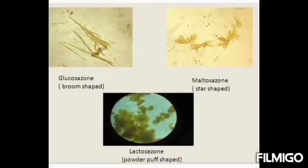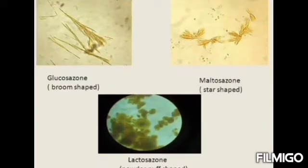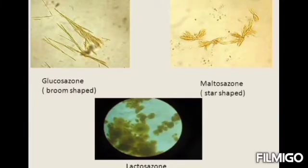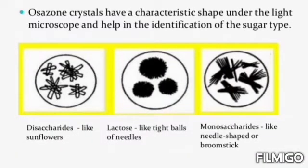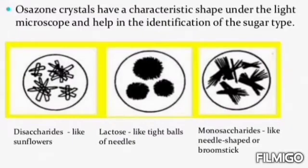Touch-me-not flower, cotton ball, and tennis ball-shaped crystals of lactose and sunflower-shaped crystals of maltose. The difference in osazone crystal structure is due to different subgroups attached to the main carbon skeleton of these reducing sugars.